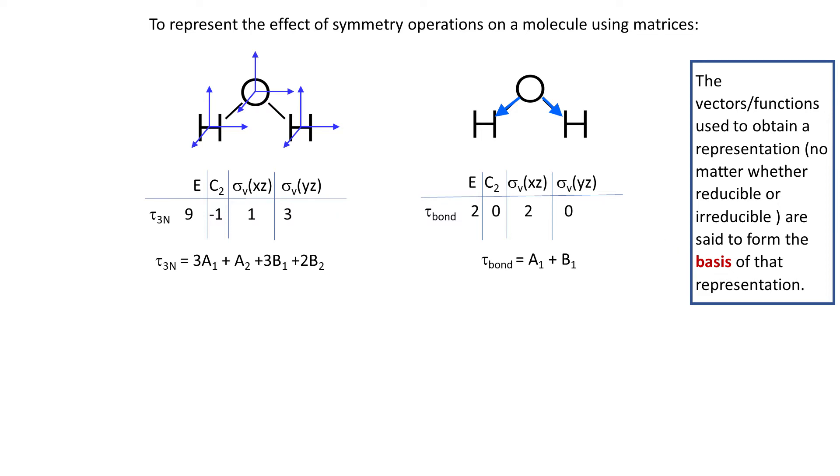So for the representation on the left, we have two vectors that are basis of this representation, and on the right there are 9 vectors that are basis of this representation. Anyway, let's come back to the main point.